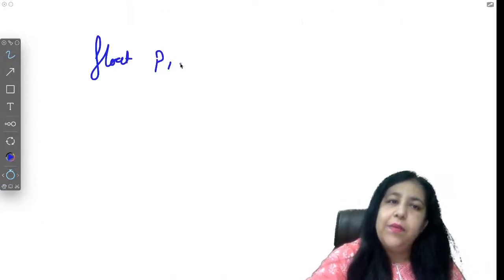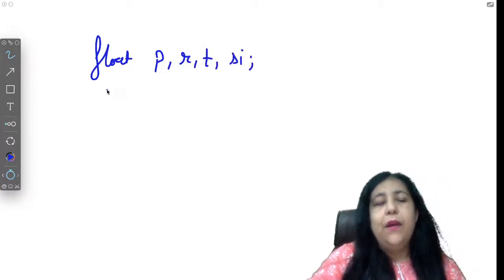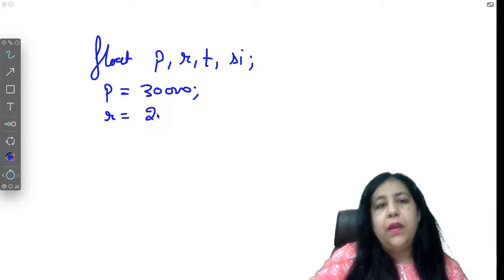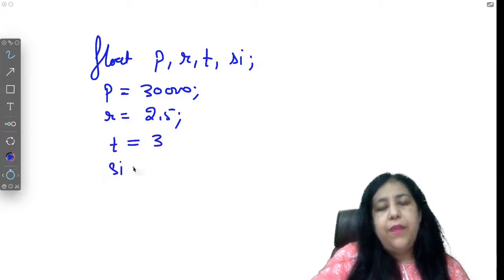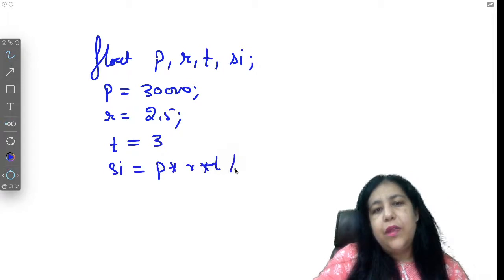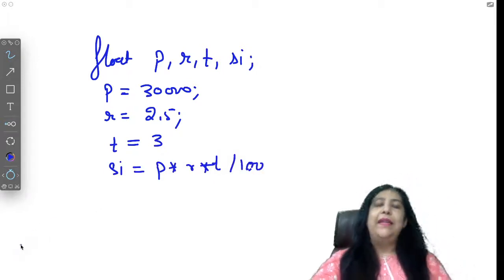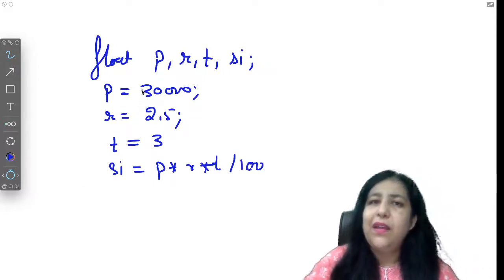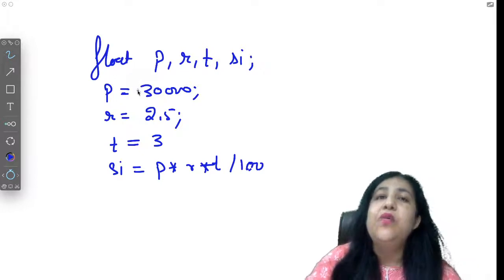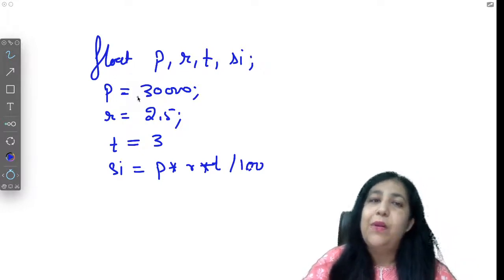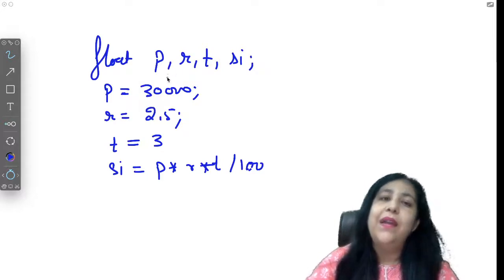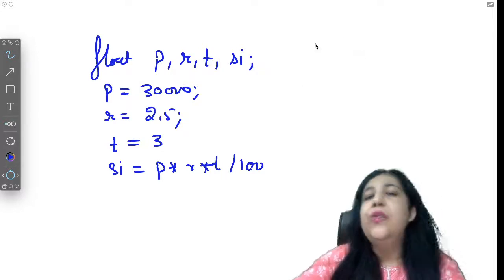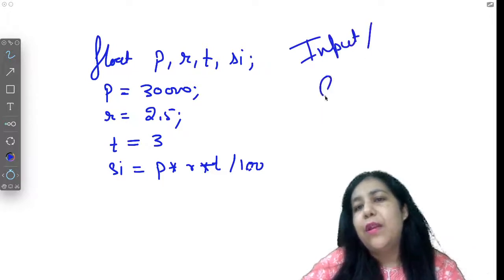In your register, write down the things which are important, which you have to memorize. That is the right concept. Now you can decide how to take the variables. Like I have taken principle, rate, time, simple interest. Principle I have put the value of 30,000, rate I have put the value of 2.5, time I put the value of 3. So simple interest will come as p into r into t divided by 100. So this thing has been calculated but we don't print it on the screen.